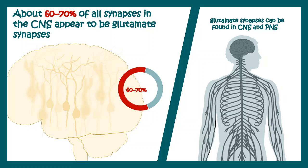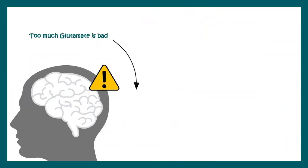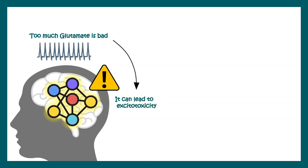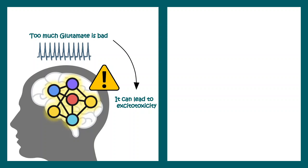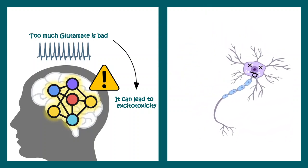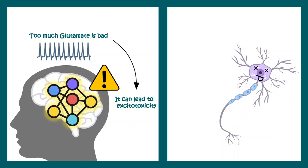Glutamate synapses can be found in the central nervous system as well as in the peripheral nervous system. But too much glutamate is also bad because it can lead to excitotoxicity, that means hyper-excitability of the brain. This leads to an excitation-inhibition imbalance which can lead to several diseases like epilepsy, and it can even lead to death of the neuron.